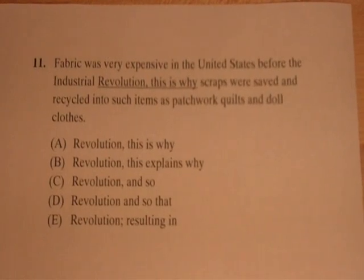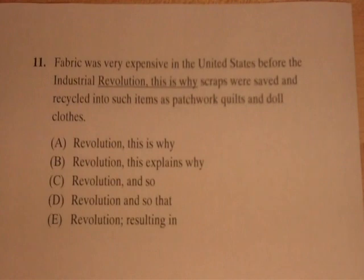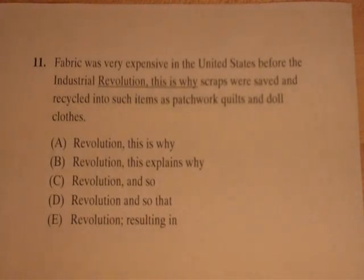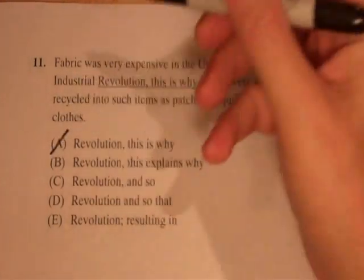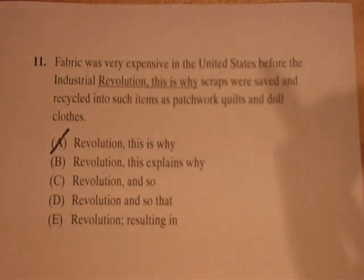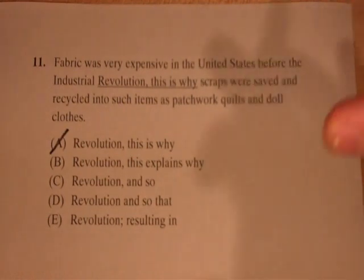This is question 11 out of 14, so it's a difficult question. 'Fabric was very expensive in the United States before the Industrial Revolution, this is why scraps were saved and recycled into such items as patchwork quilts and doll clothes.' I see a mistake — it's what we call a comma splice. A comma splice is when you take two complete sentences and join them with a comma. That's not allowed. You need a semicolon, a period — something stronger than a comma.